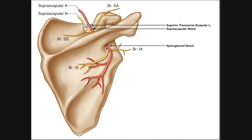There's also a structure called the spinoglenoid notch — a notch created between the scapular spine and the glenoid fossa. Once the suprascapular nerve goes through the suprascapular foramen and the suprascapular artery goes over the ligament, they come together and travel through the supraspinous fossa, then loop around the spinoglenoid notch. This allows them to innervate and supply blood to the infraspinatus muscle respectively.